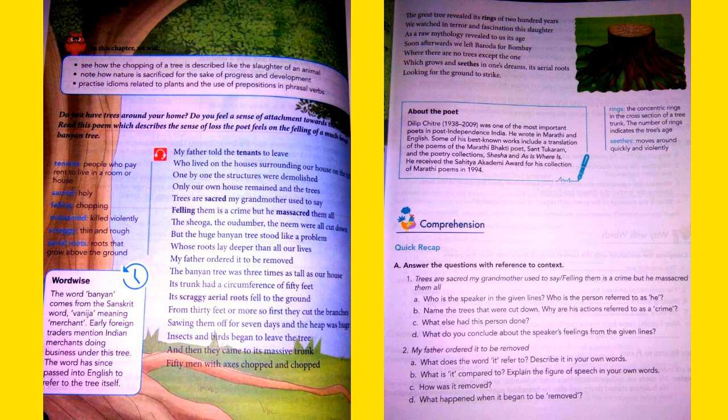The meanings are also given at the side of the pages but before explaining the poem let us read about the poet, the person who has composed the beautiful poem. So let's see about the poet, page 27. Dilip Chitre, 1938 to 2009.